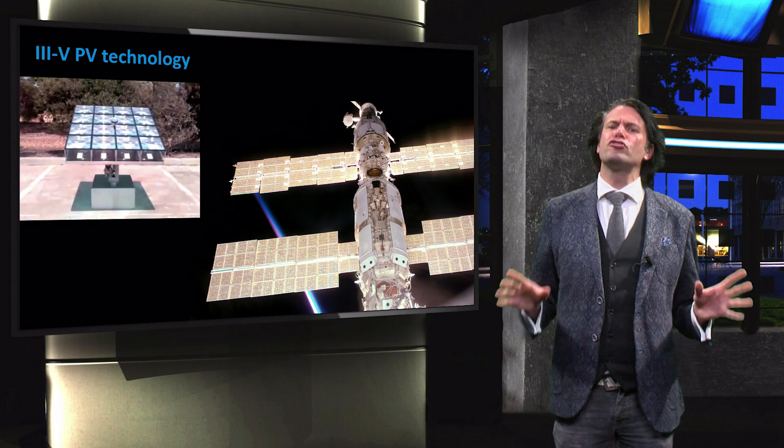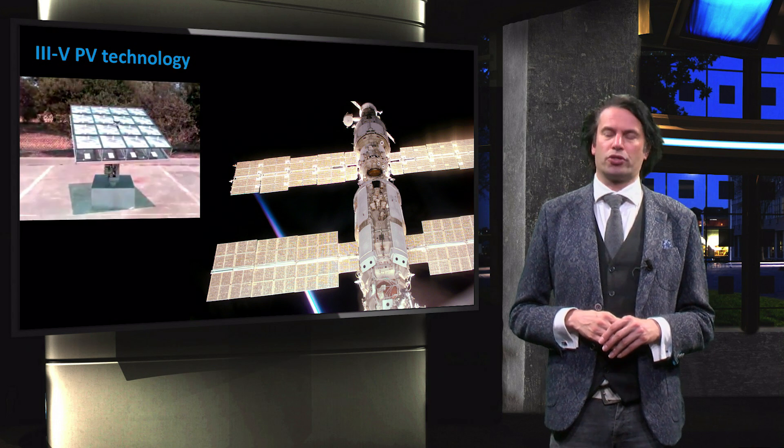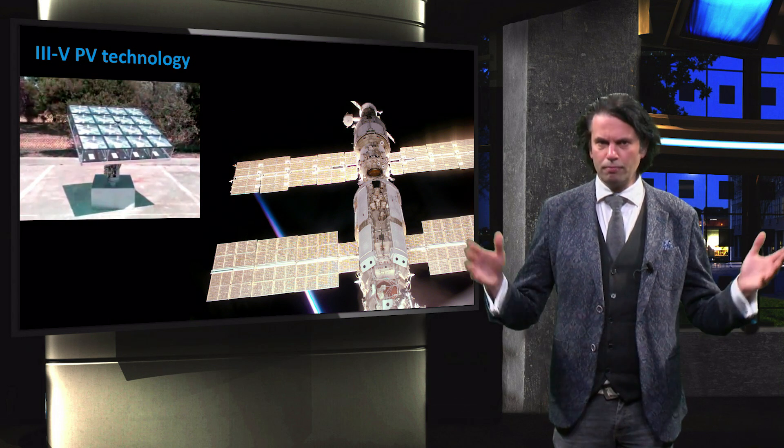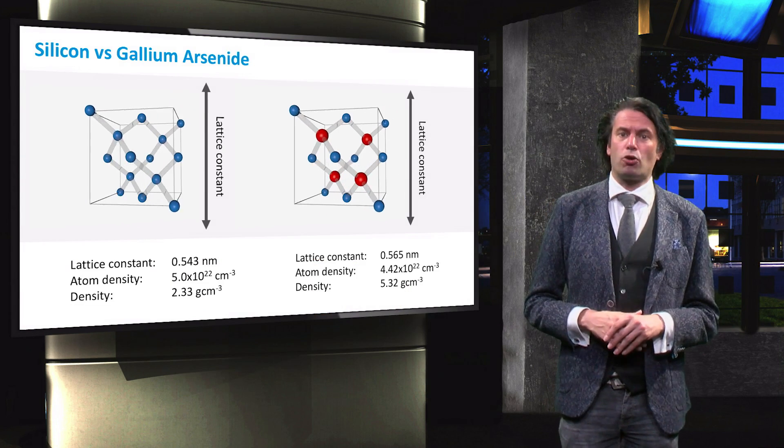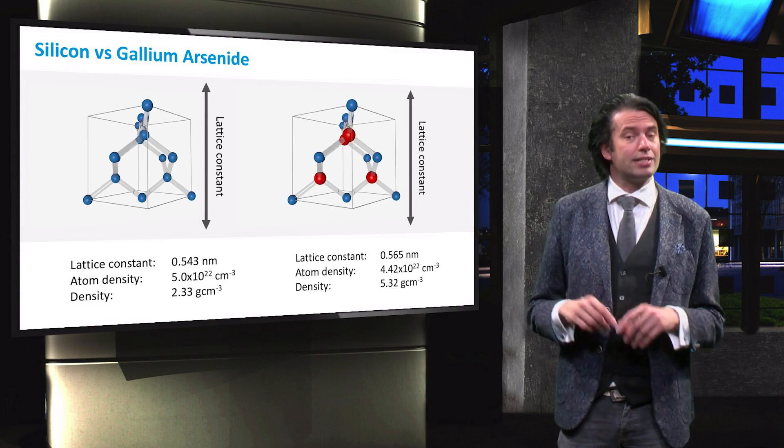We will now first focus on the structural properties of the 3.5 semiconductor materials. Let us begin with a comparison between the crystal structure of gallium arsenide and silicon.